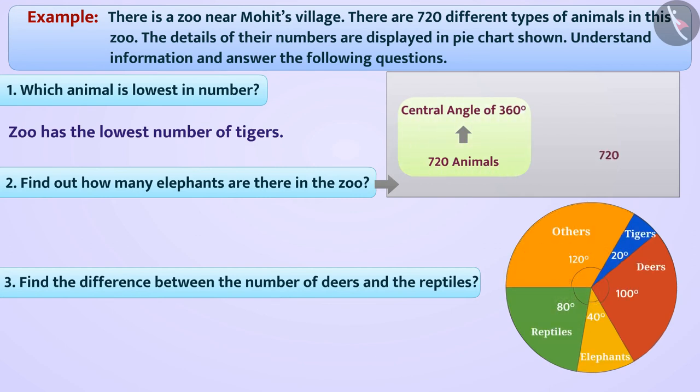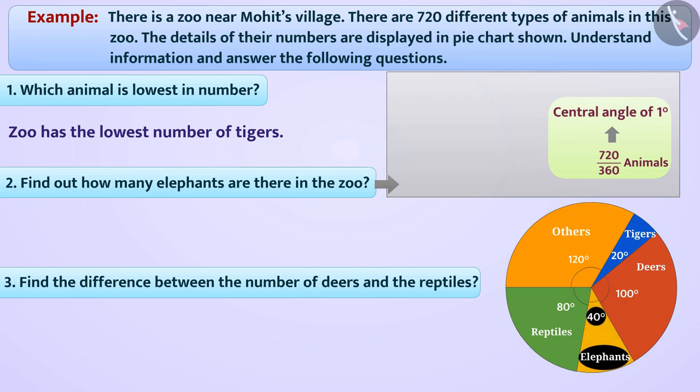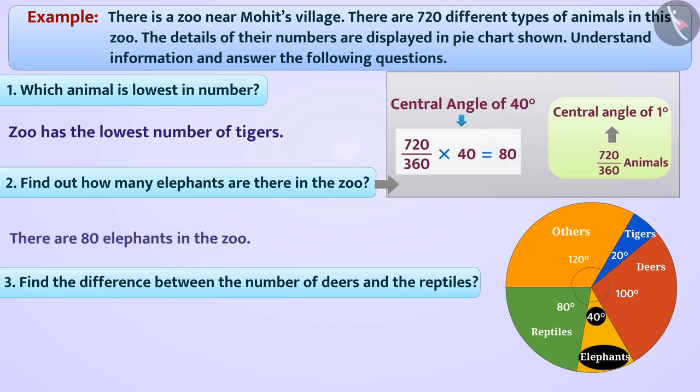In this way, 720 divided by 360 animals can be represented from a central angle of 1 degree. Since the number of elephants is denoted by 40 degrees, therefore from a central angle of 40 degrees, 720 divided by 360 multiplied by 40 elephants, that is 80 elephants, are represented. That's why there are 80 elephants in the zoo.